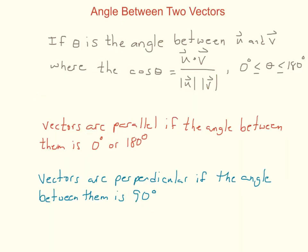With that, we can say: if theta is an angle between vectors u and v, then the cosine of theta equals u dot v over the magnitude of u times the magnitude of v, where theta is between 0 and 180 degrees. If the vectors are parallel, the angle between them is either 0 or 180 degrees. If the vectors are perpendicular, the angle between them is equal to 90 degrees.